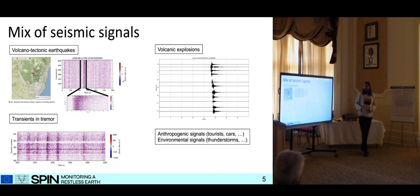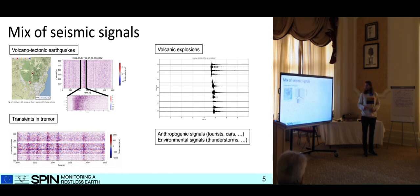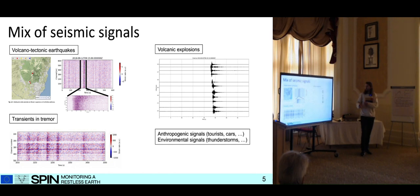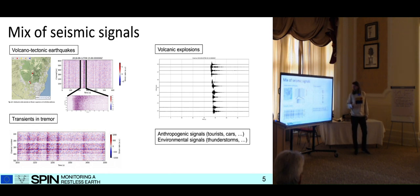We see really different events: we have volcano-tectonic events — here's a zoom of an earthquake — there are transients and tremor, we have volcanic explosions from the geophones, and there are a lot of anthropogenic signals, for example tourist cars, thunderstorms, and helicopters.